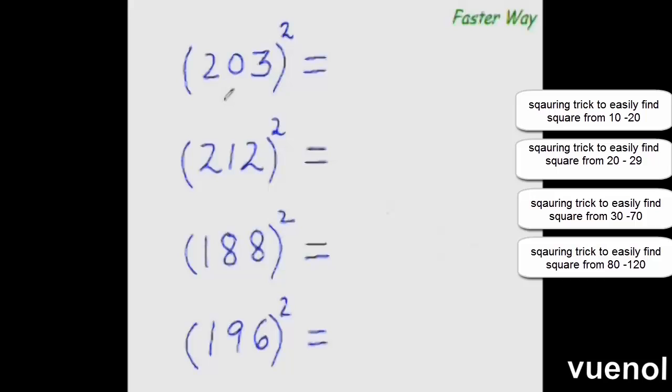Now find these squares of all these numbers as fast as you can quickly. Start with the first number 203 square. So take the base as 200. So this is 3 more than the base. So add this digit to this entire number. 3 plus 203 is 206.